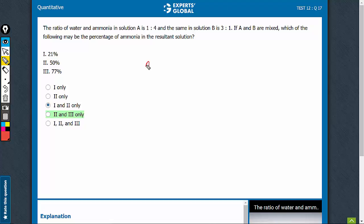A has 1 out of 5 parts water, so A has 20% water and therefore ammonia is the other 80%. B has 3 out of 4 parts water and therefore 75% is water and 25% is ammonia.